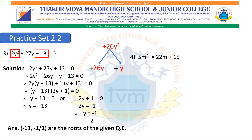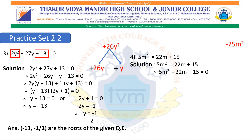Sum number 4: 5m squared equals to 22m plus 15. This equation is not in standard form, so we arrange it first. After arranging in standard form: 5m squared minus 22m minus 15 equals to 0. Multiplying the quadratic term and the constant value, we get minus 75m squared. We split this into two parts such that after multiplying we get 75m squared, and after subtraction, we get 22m. Those numbers are 25m and 3m. After multiplying we get 75m squared and after subtracting we get 22m.